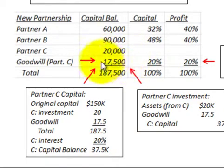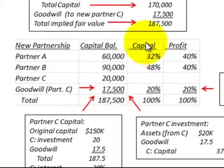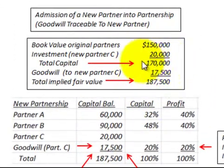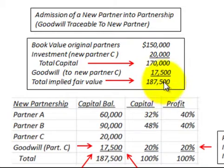That's how we handle the admission of a new partner into the partnership where there's goodwill traceable to the new partner. In this case, it was $17,500 worth of goodwill — simply the difference between the total capital of $170,000 and the total implied fair value of $187,500.